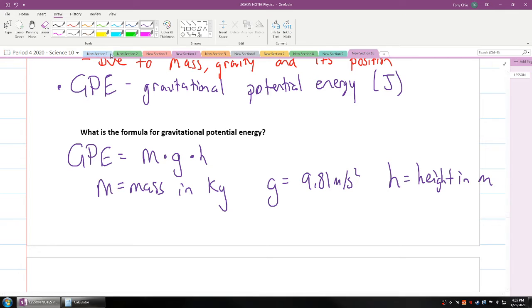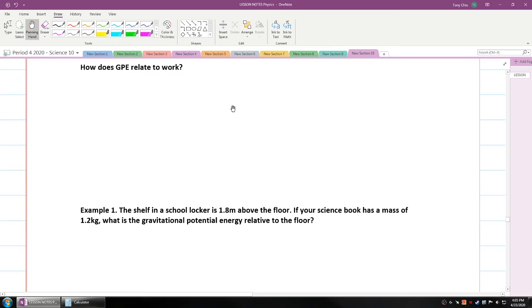So that means if something is taller, it will have more gravitational potential energy, if it's higher up. But how does GPE relate to work then? Well, let's look at these two formulas side by side. We know from previously, work is equal to force times displacement. And we know that force is equal to mass times acceleration. If we were to plug this force into here, what we're going to get is work is equal to mass times acceleration times displacement.